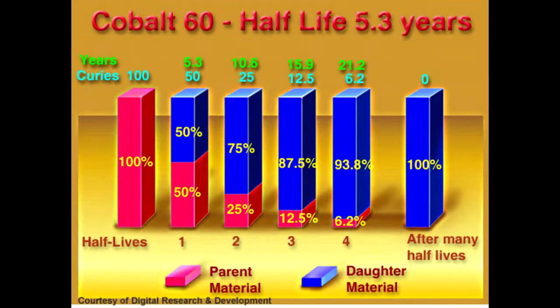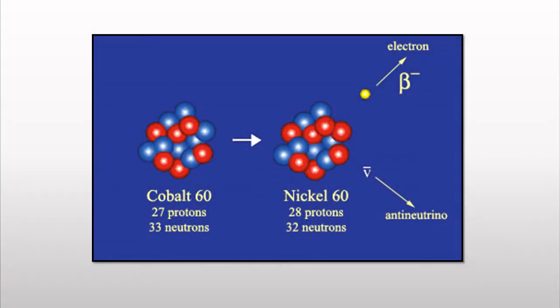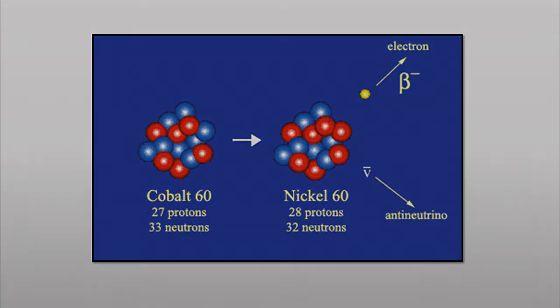Cobalt-60 has a half-life of 5.3 years, which is the amount of time it takes for half the mass of the parent nuclei to decay. This isotope will undergo beta decay, and the parent nuclei, which is cobalt-60, will emit a beta particle — which is an electron — and form a daughter nuclei of nickel-60.